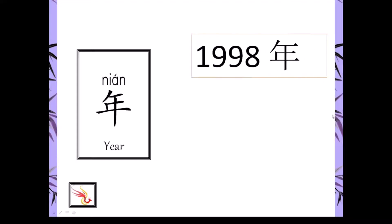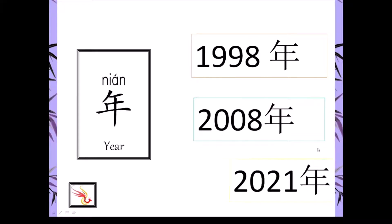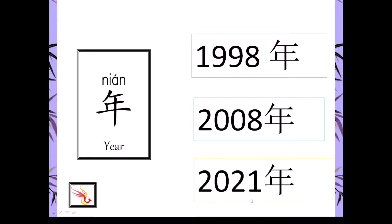When you tell the year in 1998 in English, in Chinese we just say singular numbers. It'll be 1-9-9-8 Nián. 2008 in Chinese is 2-0-0-8, and 2021 is 2-0-2-1.